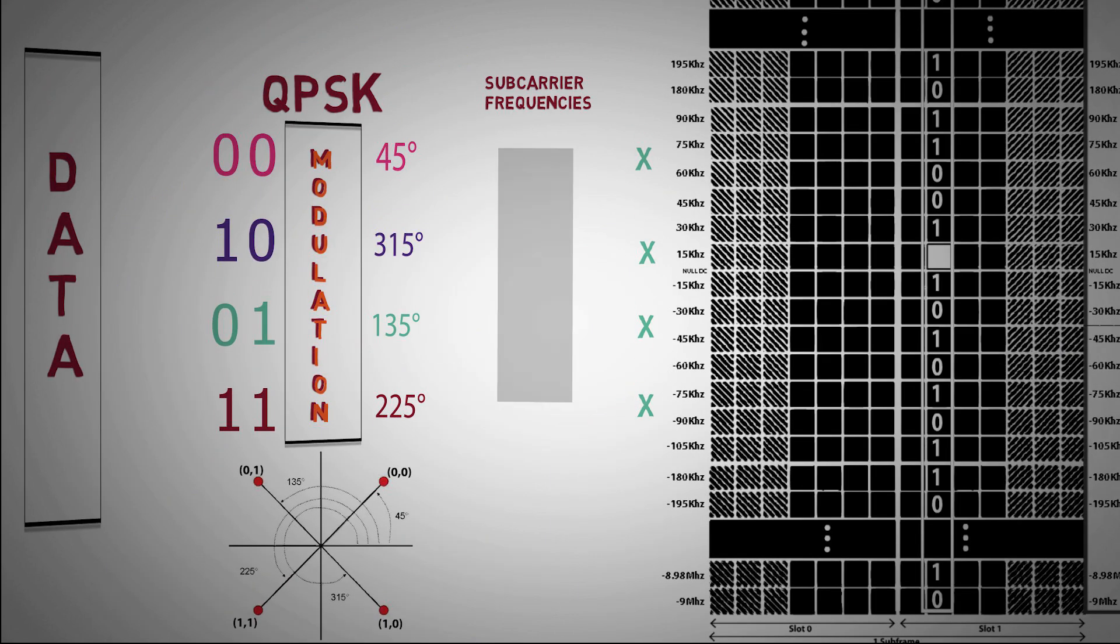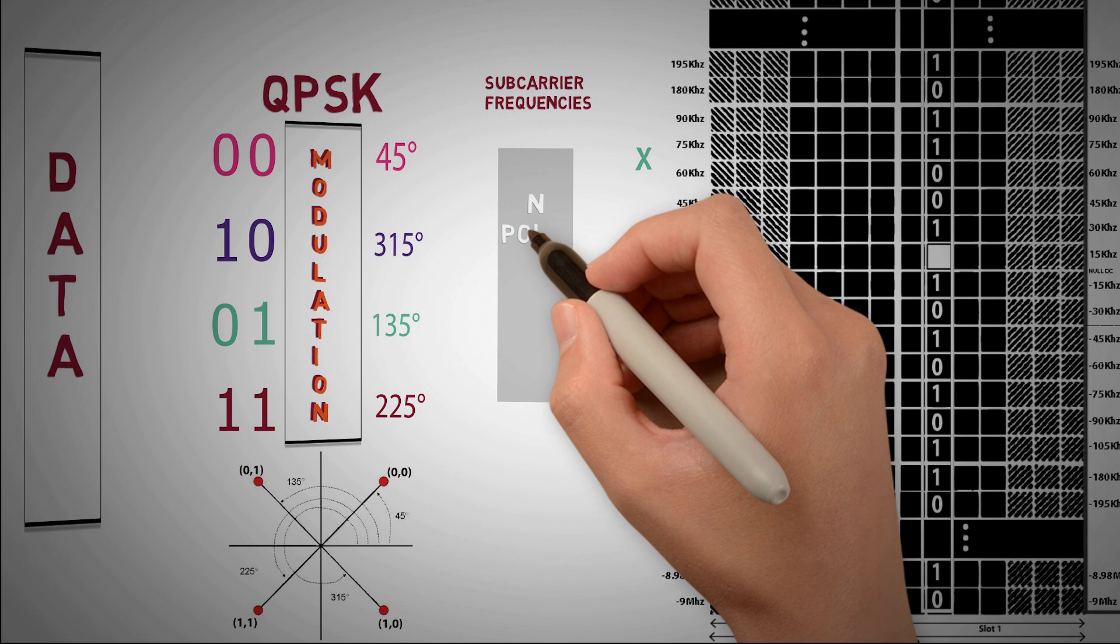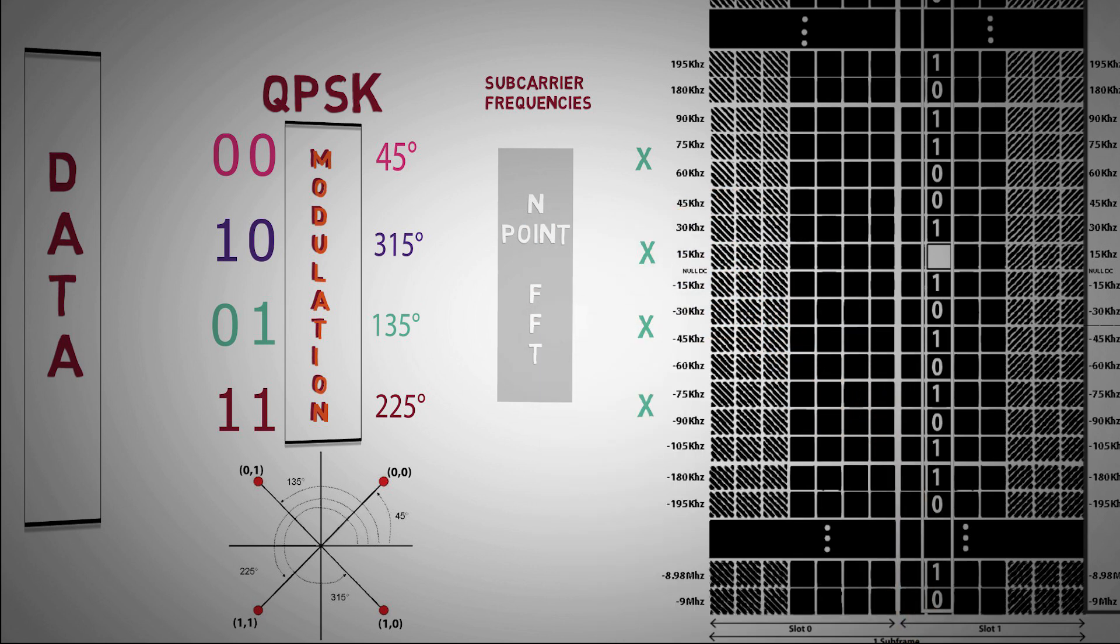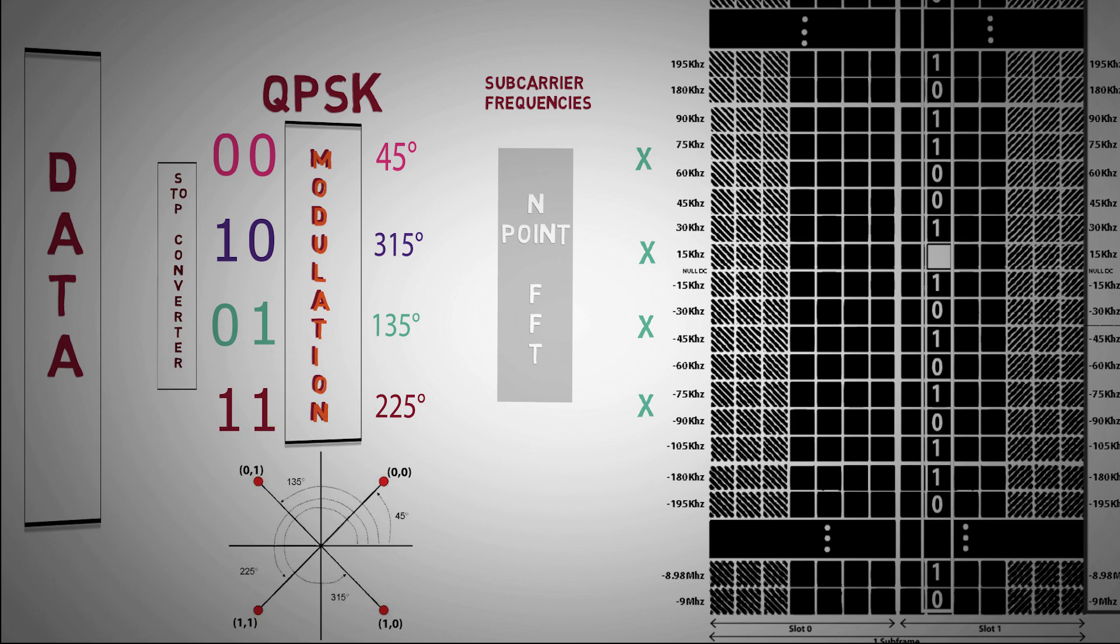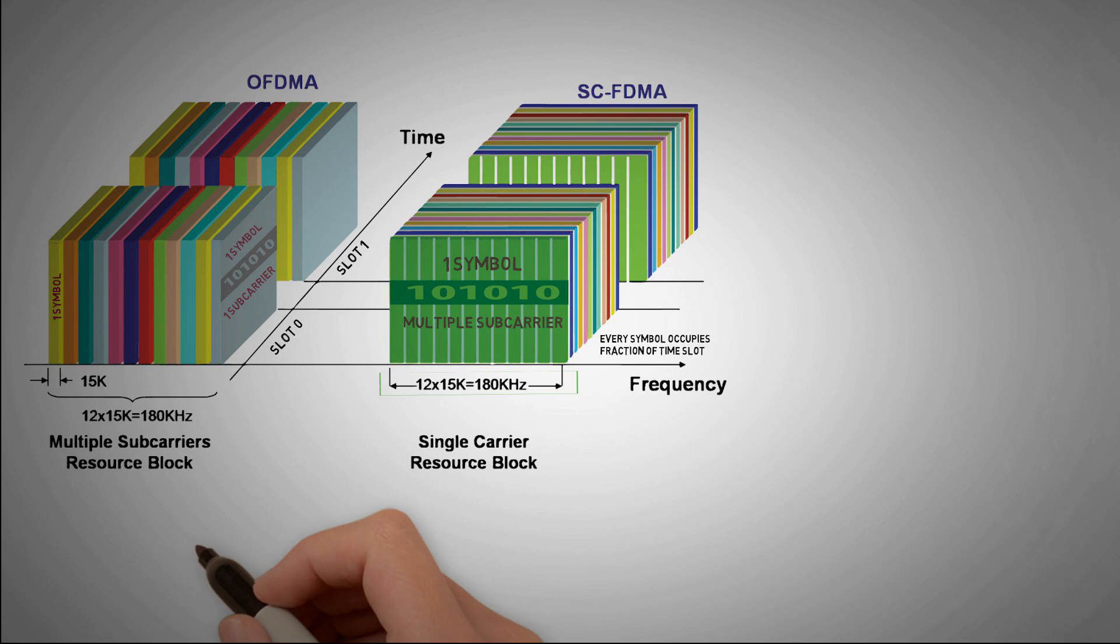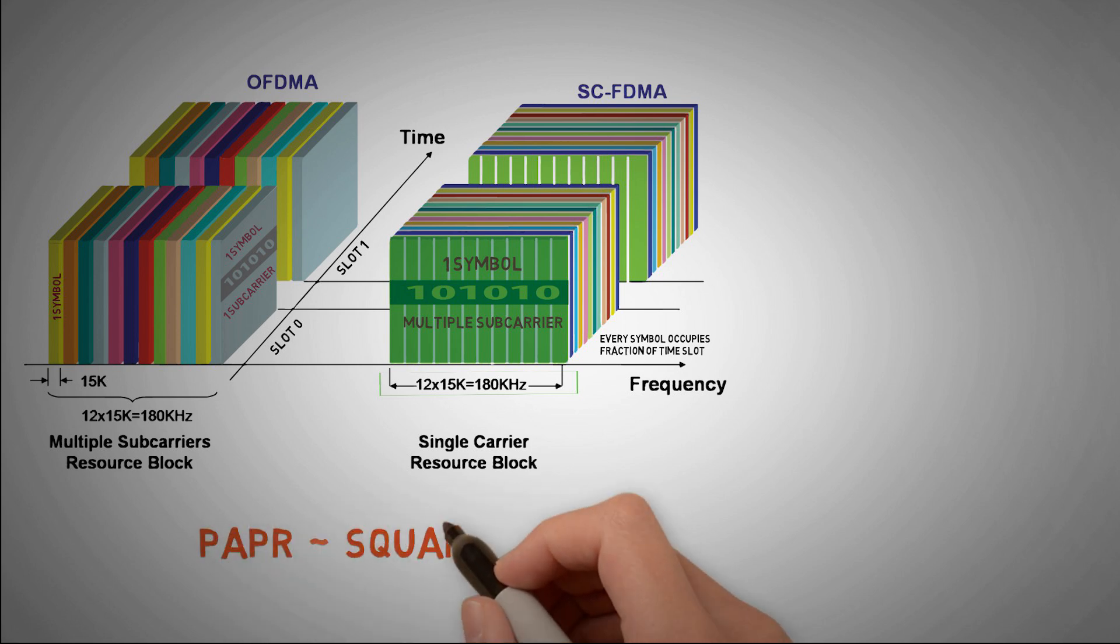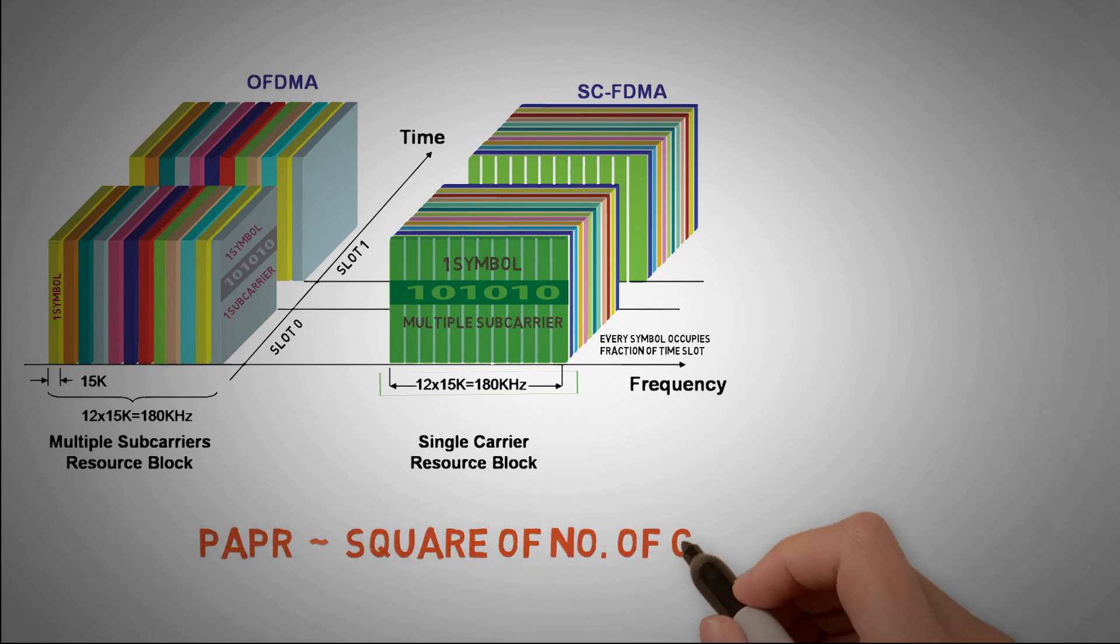To achieve this, SC-FDMA introduces an N-point FFT block right after the serial-to-parallel converter in the OFDMA structure. The FFT block converts parallel sequence of symbols in time domain to different frequency points. Now, peak to average power ratio is proportional to the square of number of carriers involved. SC-FDMA reduces PAPR by reducing the number of carriers.